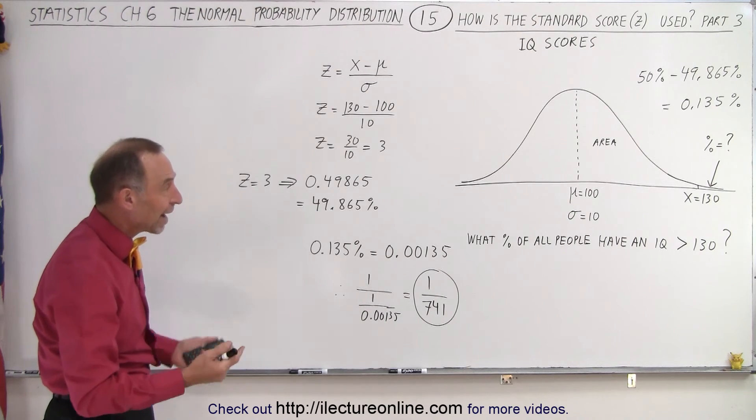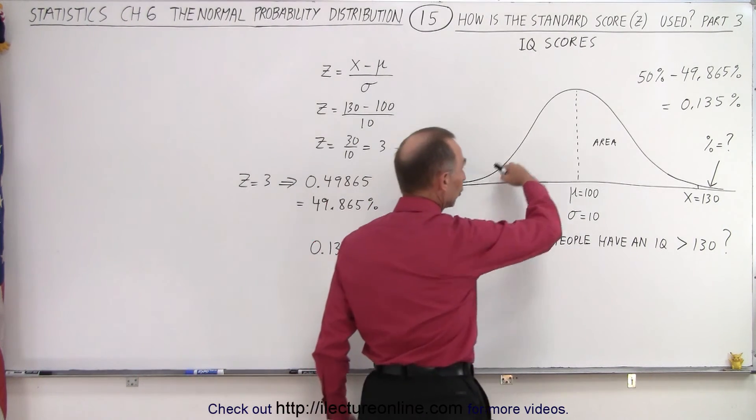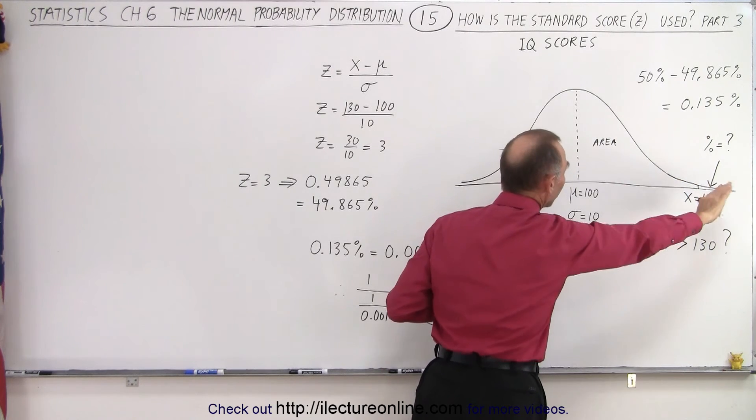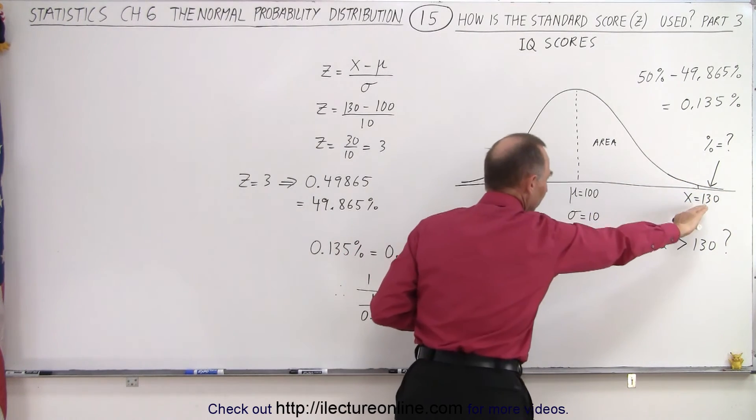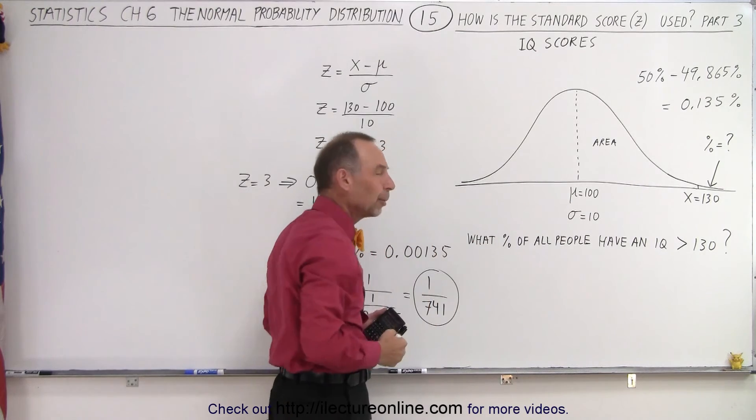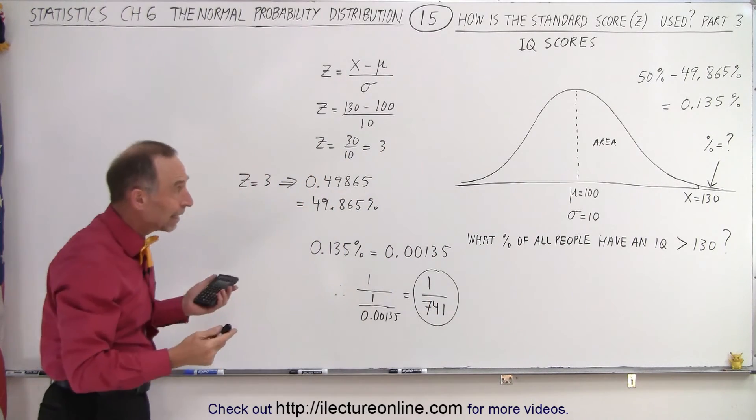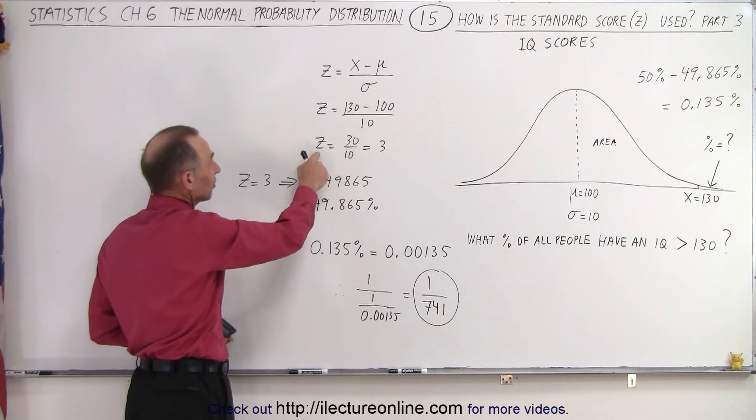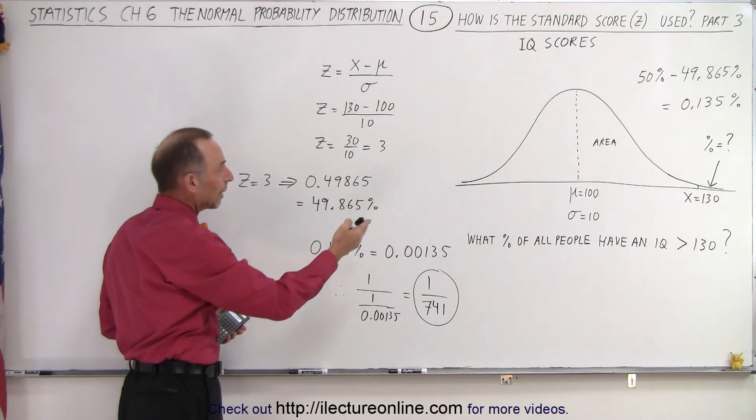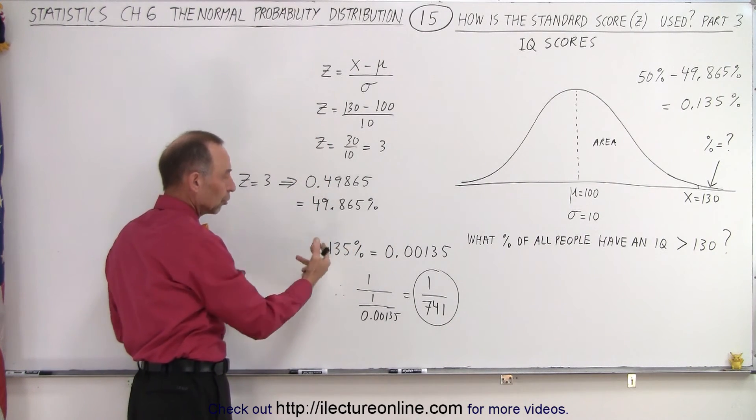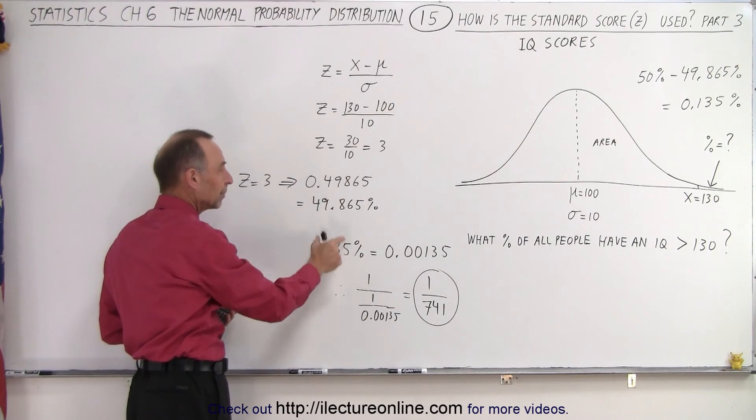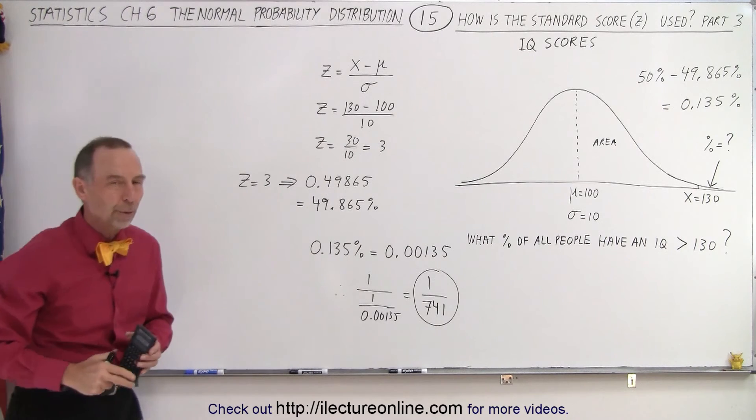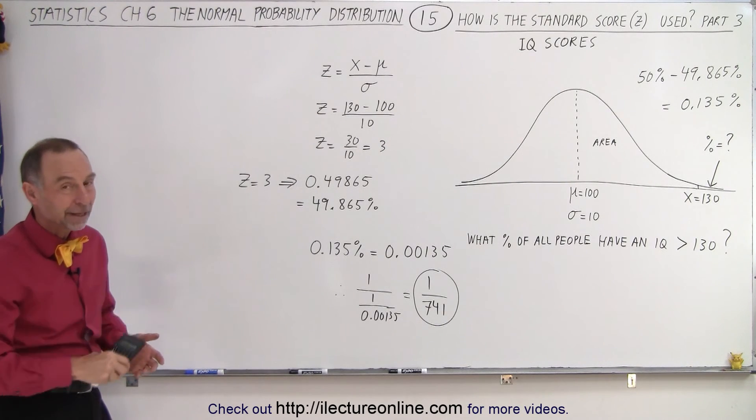can use that to find the area underneath a normal distribution curve between any two points or above some limiting point or below some limiting point. You can figure out anything you want in that curve by using this equation, the z standard score, and then using a look-up table to find the corresponding percentage representing the area underneath the curve. And that is how it's done.